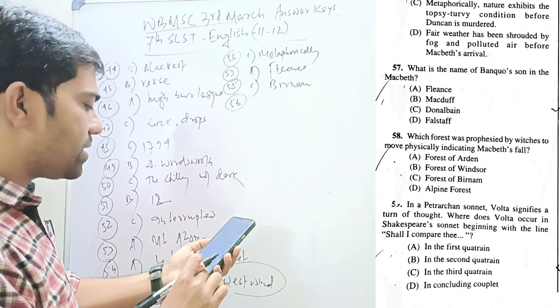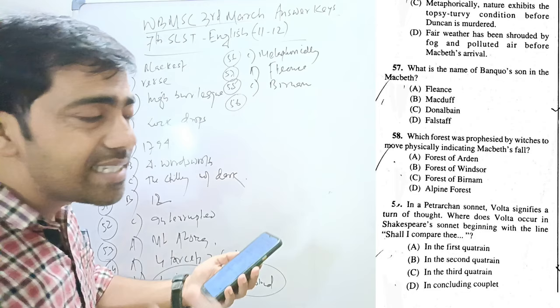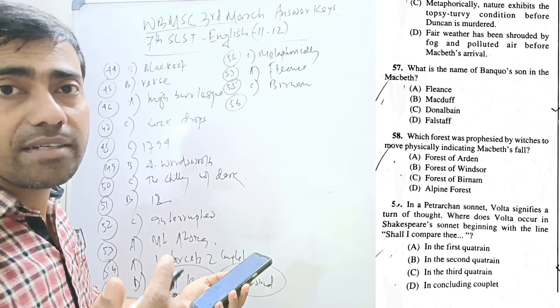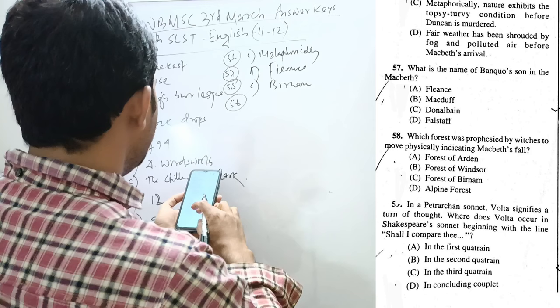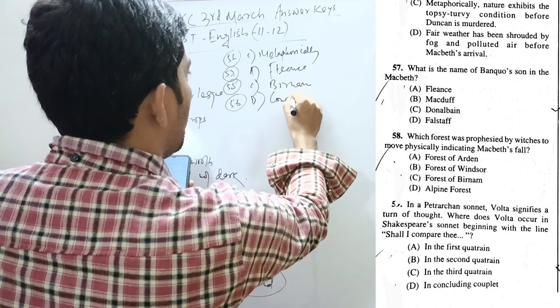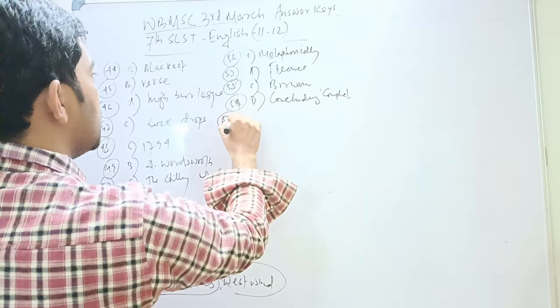In a Petrarchan sonnet, volta signifies a turn of thought. Yes. In Petrarchan, volta turn. In ninth line, volta occurs in Petrarchan type of sonnet. But, where does volta occur in Shakespearean sonnet? Beginning with the line Shall I compare thee. In Shakespearean sonnet, the volta actually occurs in line 13, the last couplet. The last couplet is considered to be the volta of Shakespearean sonnet. So, it is what? Concluding couplet.